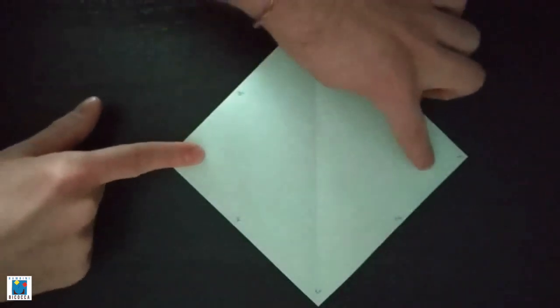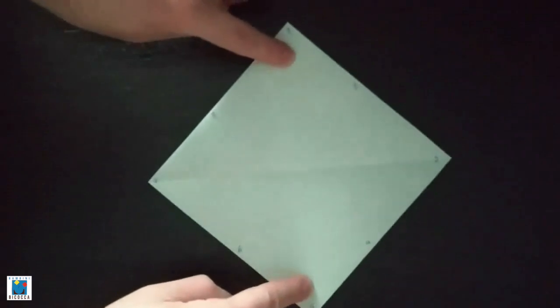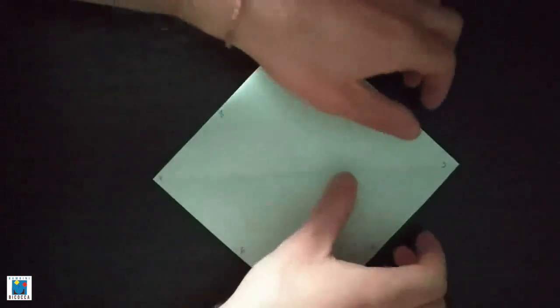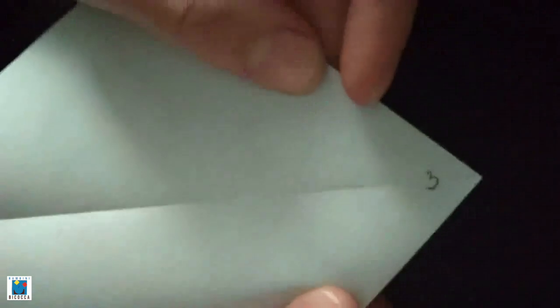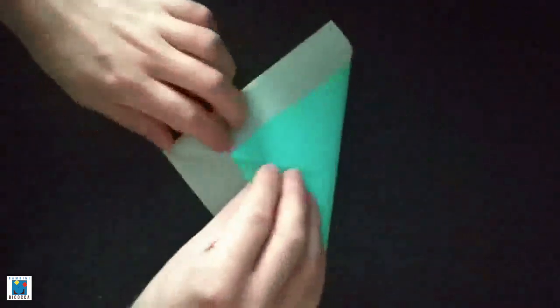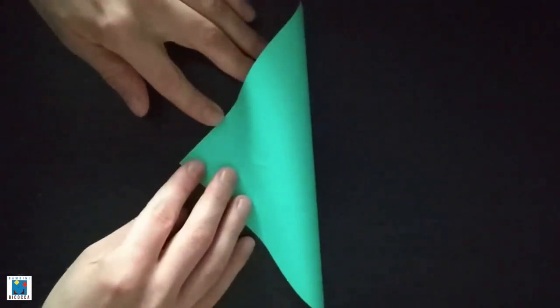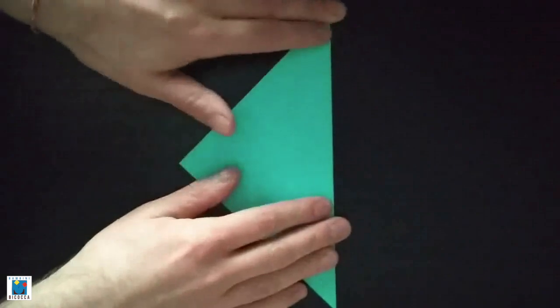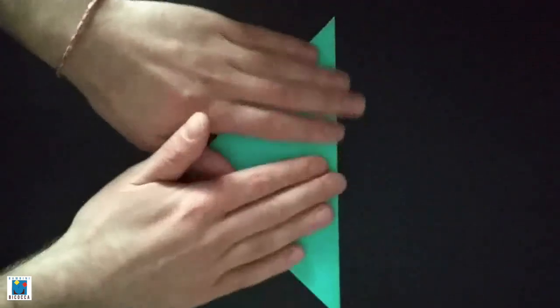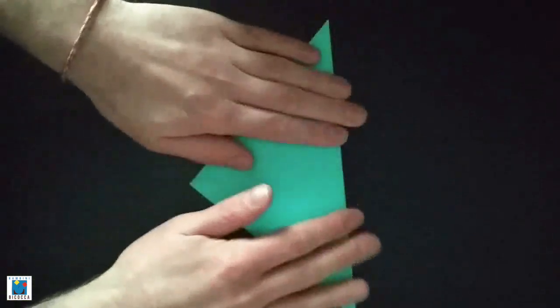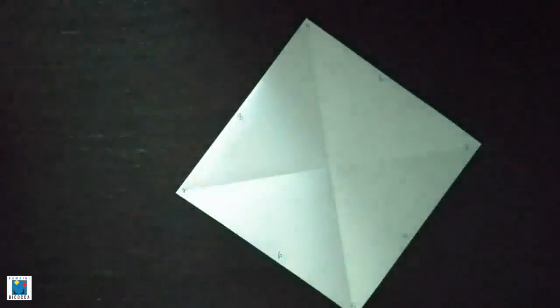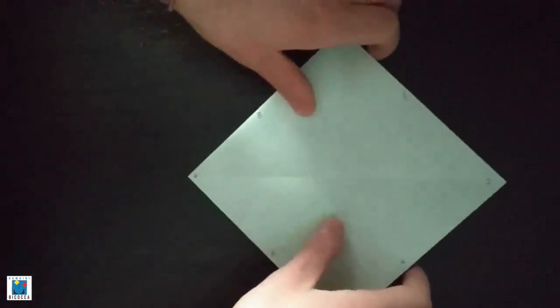And we have to turn it. Now, we have to repeat the same thing, but on the opposite side. We're gonna take corner number 3 and we're gonna put it on corner number 7. Let's just massage the paper. Now, we have to open it again. And we have to flip the paper. We have to turn it back.